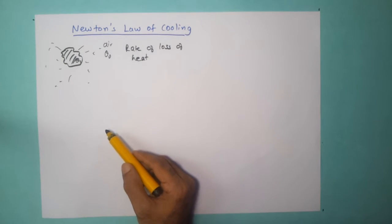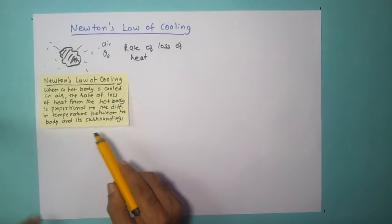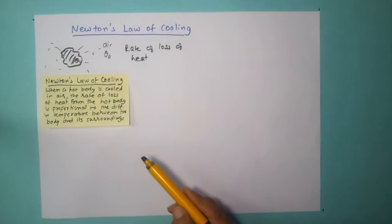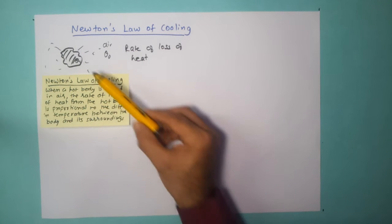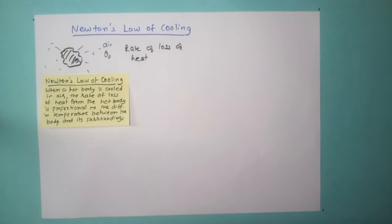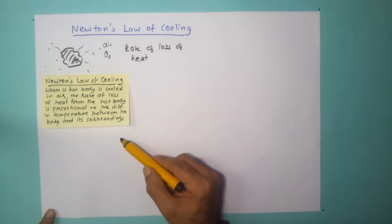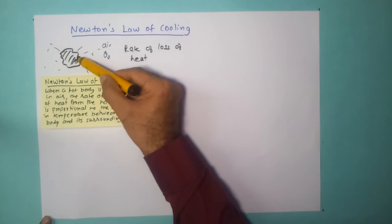The statement of Newton's law is: when a hot body is cooled in air, the rate of loss of heat from the hot body is proportional to the difference in temperature between the body and its surroundings. As more the difference between theta 1 and theta 0, the rate of heat loss will be faster. The moment it loses heat, the temperature of the object drops, the temperature difference decreases, and therefore the rate of loss of heat would also decrease.